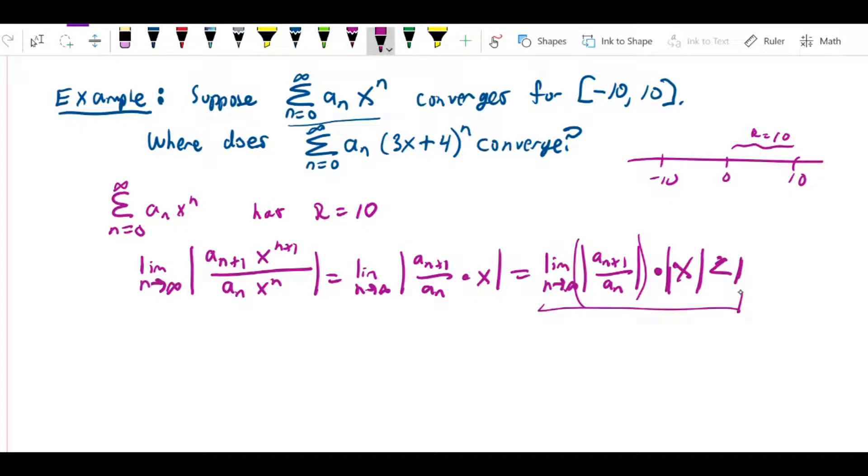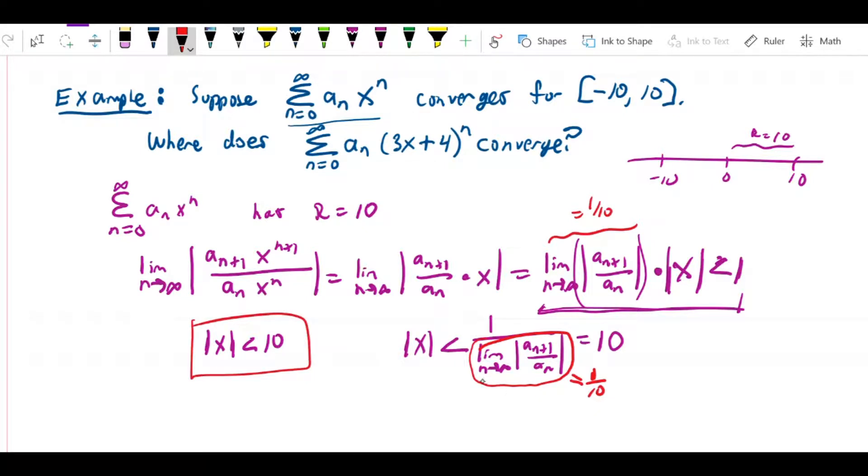Now, note that what we got here, we know that if we're getting a radius of convergence of 10, the last step that we get is going to say |x| is less than 10. That's when we get a radius of convergence of 10 for a series centered at 0. So what that means is that if I have this expression here, limit of this times |x| equals 1, then that means that |x| less than 1 over that limit must have given 10. That means that this expression here has to be equal to 1 over 10. That's the only way that could be true. So we've now figured out what this limit must be.